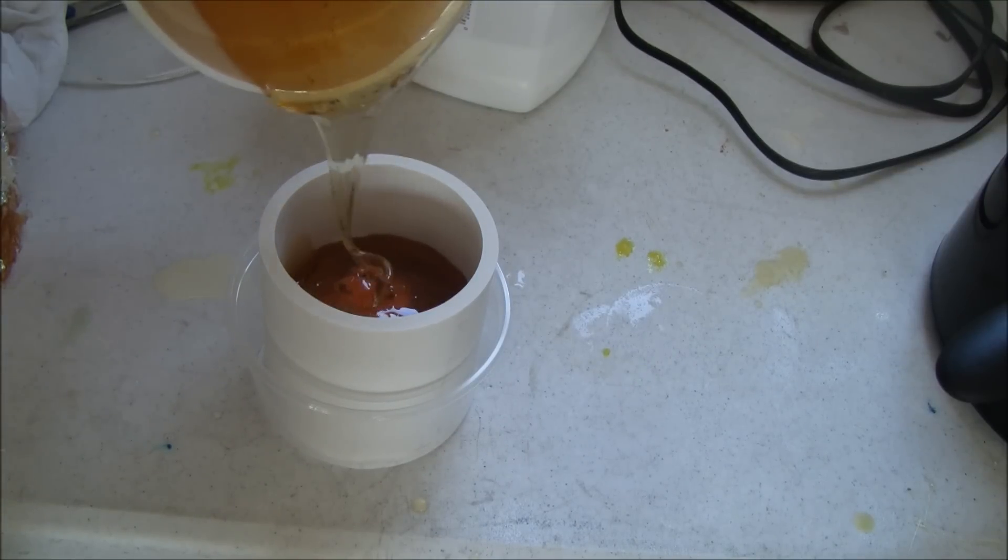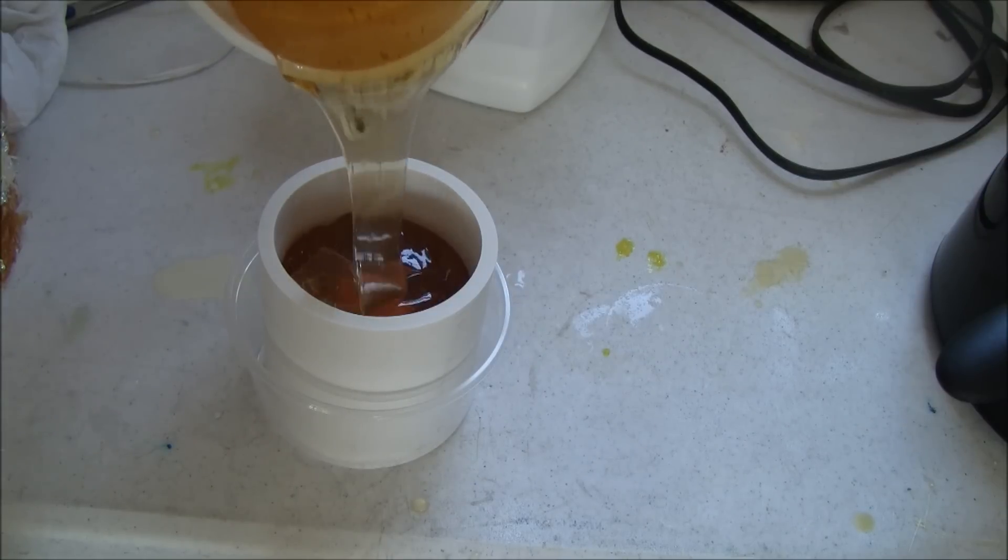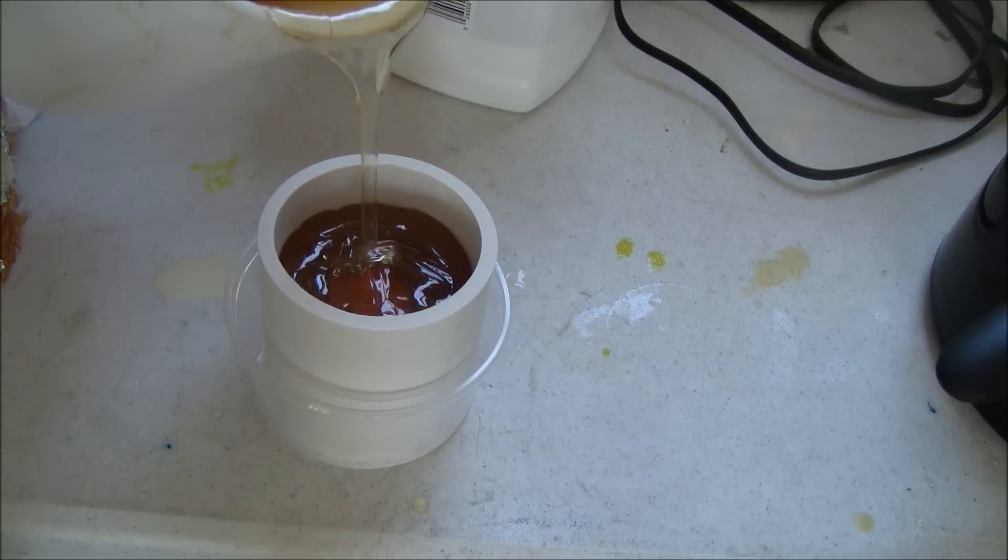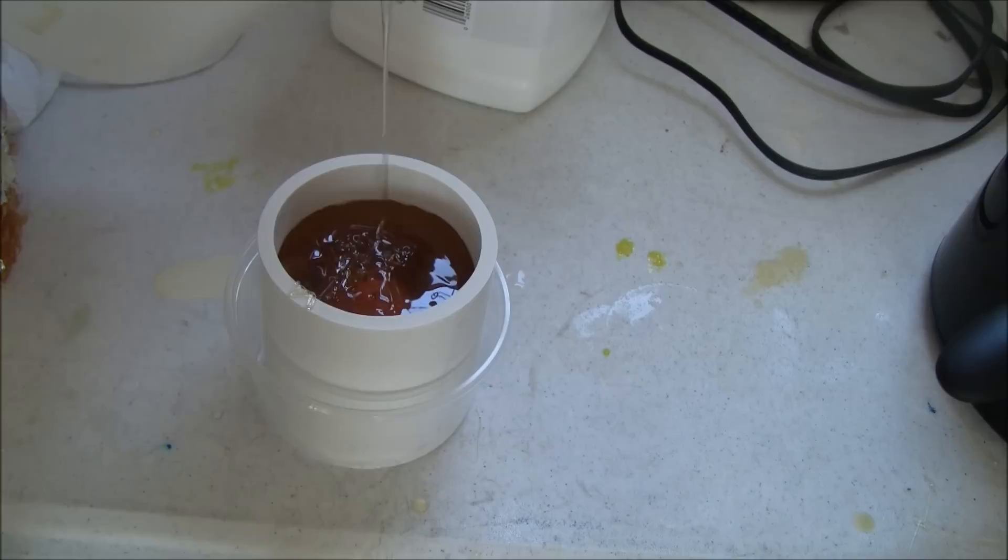Melt the ComposiMold and pour it over your part. To melt the ComposiMold, follow the instructions on the label. Melt in short intervals until you are comfortable with how it melts in your microwave. You can also use a double boiler or a chocolate melter.